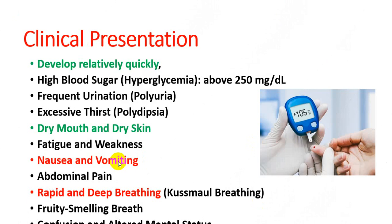Diabetic ketoacidosis can develop quickly within a day. Clinical features include hyperglycemia — blood glucose above 250 mg/dL — polyuria with frequent urination, and polydipsia with excessive thirst. Dehydration causes dry mouth and dry skin. Fatigue and weakness occur when glucose is not properly utilized. Nausea, vomiting, and abdominal pain disturb the gastrointestinal system. Respiratory findings include rapid and deep breathing, and a fruity smell to the breath due to ketone bodies, which is a very diagnostic feature.